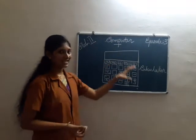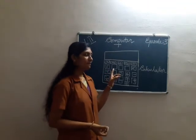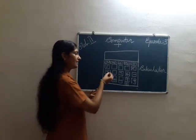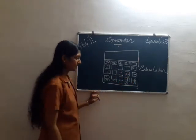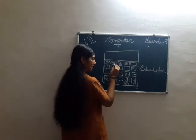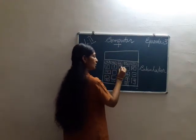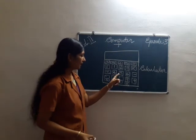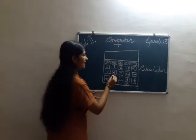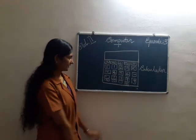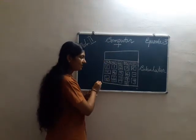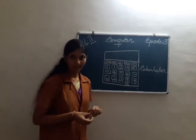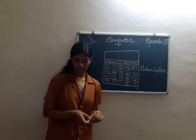The next worksheet shows a calculator with some missing numbers. Can you help me write the missing numbers? The numbers 5, 6, and 9 are already present. The missing numbers are 1, 2, 3, 4, 7, and 8. This is a calculator and we can calculate all the operations like addition, subtraction, multiplication, division, and any other calculations.